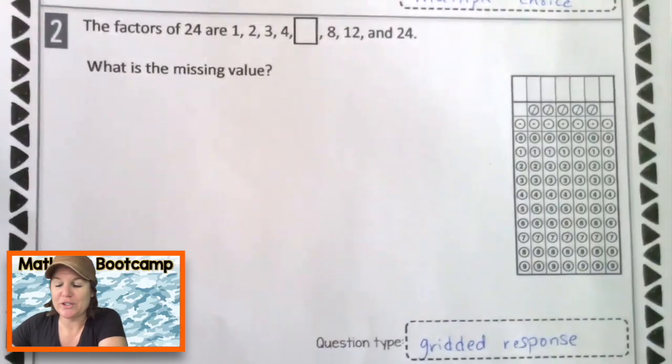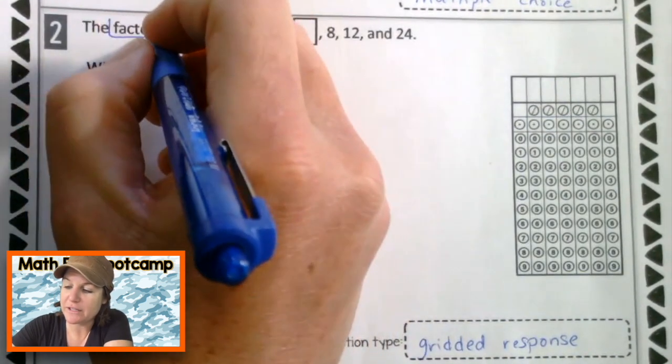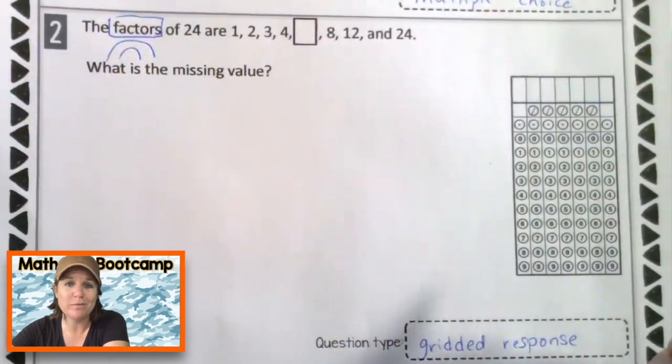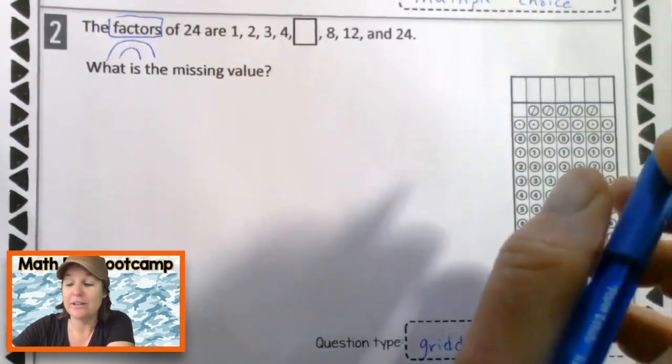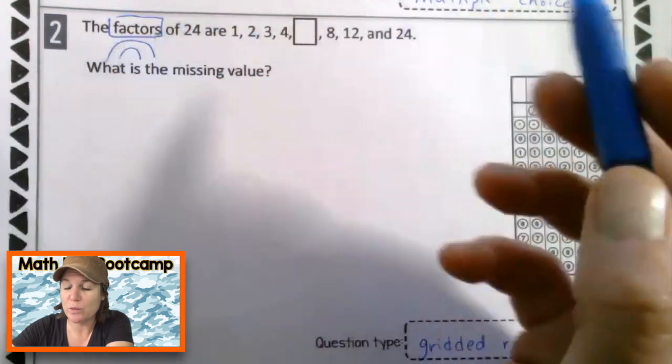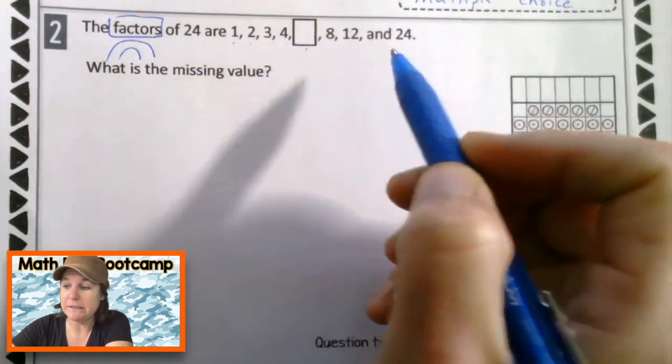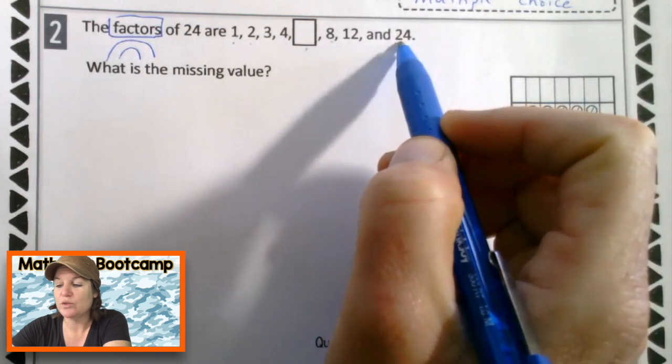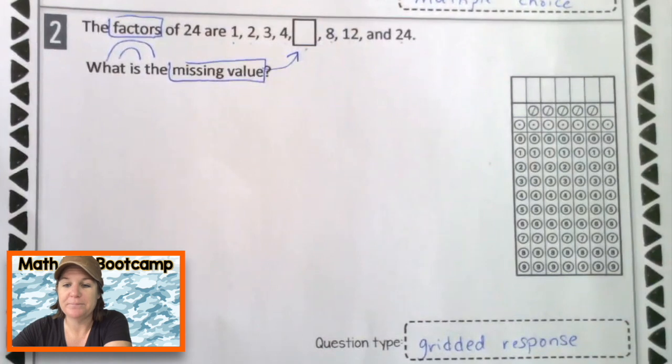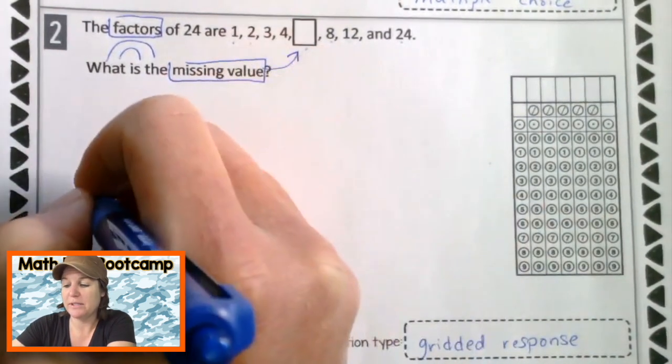Let's take a look at number two. It says the factors of 24. So when I think of factors, I think of a factor rainbow, which I dive into in McCarthy math 155. The factors of 24 are one, two, three, four blank, eight, 12 and 24. What is the missing value? So let's go ahead and bust out our factor rainbow. They've already given us quite a bit of information here.